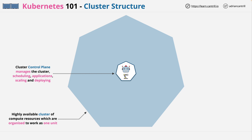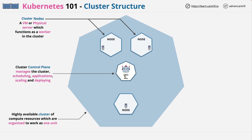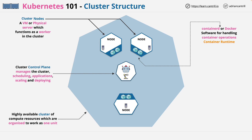Compute within a Kubernetes cluster is provided via nodes, and these are virtual or physical servers which function as a worker within the cluster. These are the things which actually run your containerized applications. Running on each of the nodes is software, and at minimum this is Containerd, or another container runtime, which is the software used to handle your container operations.